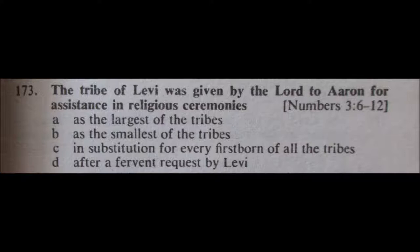I don't think that D is correct, and I don't think that C is correct either. I'm going to go for B, as the smallest of the tribes. So 173, B.